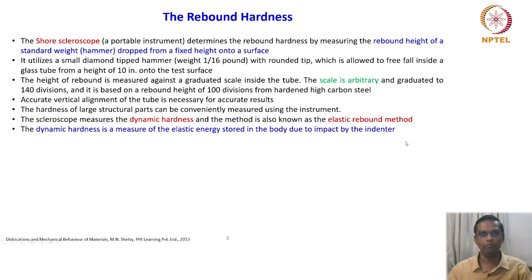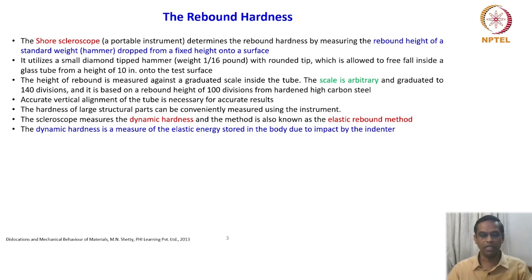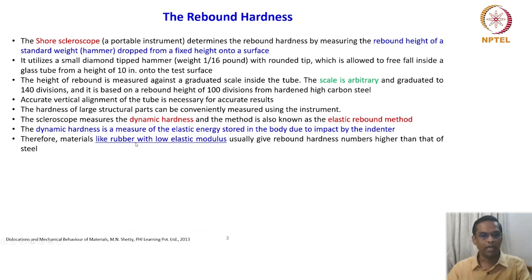Accurate vertical alignment of the tube is necessary for accurate results. The hardness of large structural parts can be conveniently measured using this instrument. The Scleroscope measures dynamic hardness, and the method is also known as the elastic rebound method, because the rebound takes place due to elasticity. Dynamic hardness is a measure of elastic energy stored in the body due to impact. For example, thick polymeric sheets used in foundations as shock absorbers have a specific Shore hardness. All polymeric, semi-crystalline, and rubbery materials use this kind of hardness. Materials like rubber with low elastic modulus usually give rebound hardness numbers higher than that of steel.